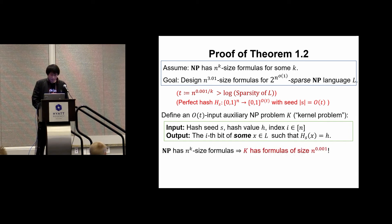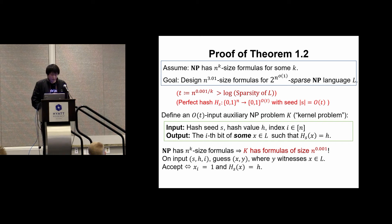Now we'll show that this language K is actually in NP. So by our assumption, K will have formulas of size t^k, which is n^0.001. Why is this in NP? Because we can simply guess a string X and the witness Y, which proves that X is in the NP language L. Then we accept if and only if the i-th bit of X is 1 and the hash value of X equals H. So this is in NP.